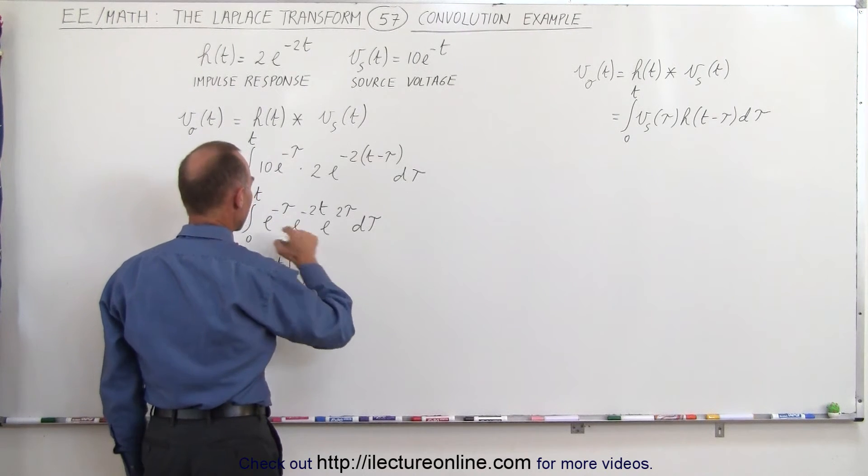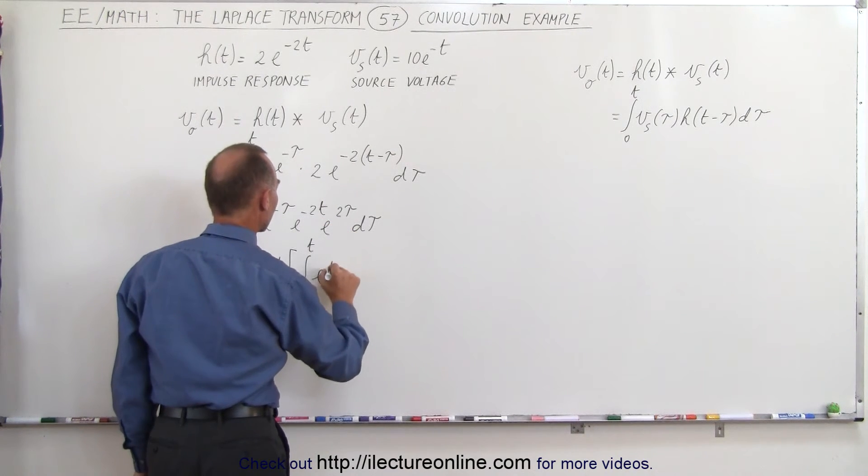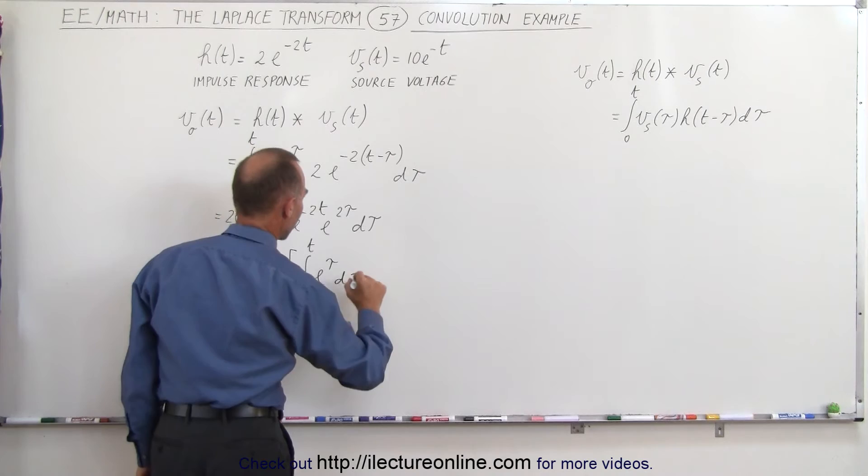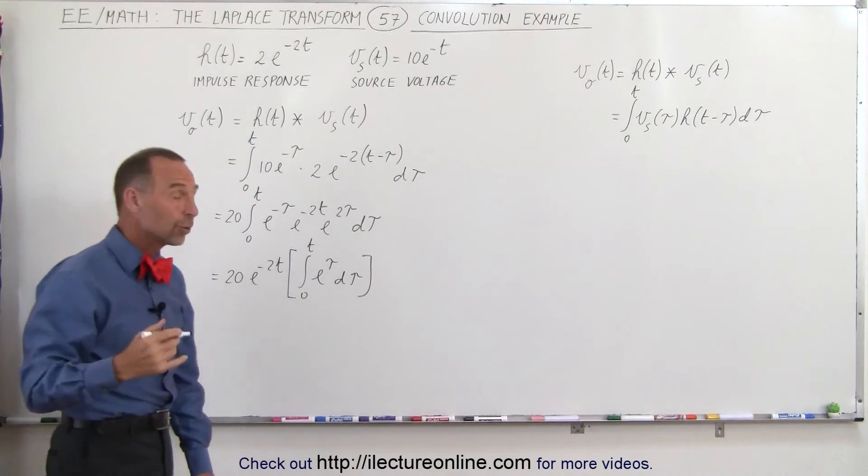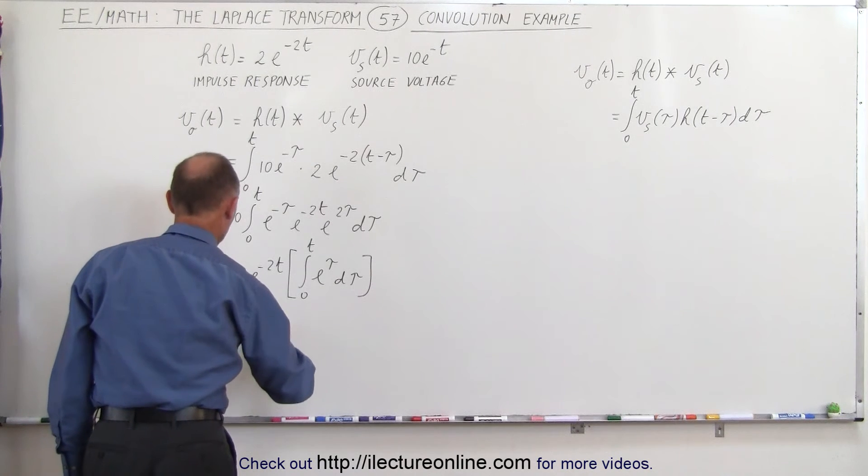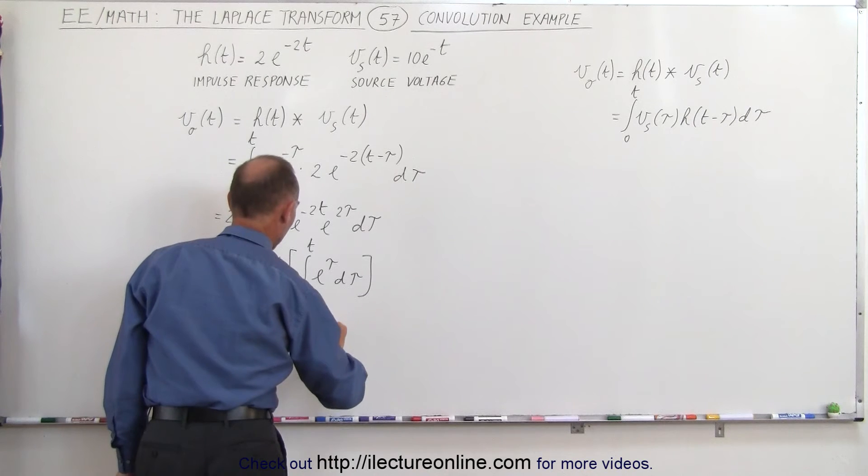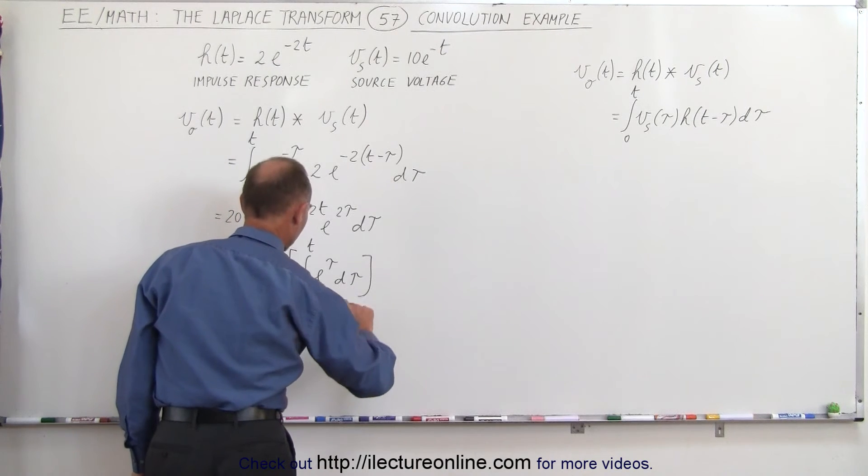So this is the integral from 0 to t of e to the minus tau times e to the plus 2 tau, which gives us e to the tau d tau. Okay, now we can integrate that, that's a relatively easy integral. This is equal to 20e to the minus 2t times e to the tau evaluated from 0 to t.